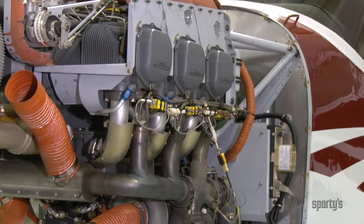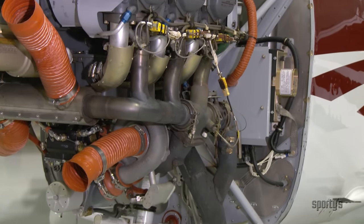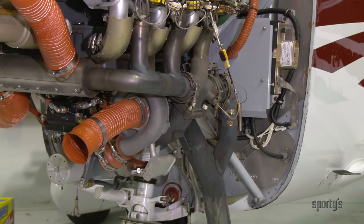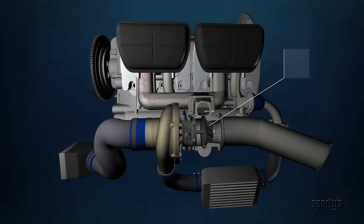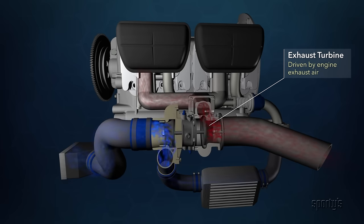Turbochargers utilize a turbine in the exhaust system, which is spun by otherwise wasted exhaust gases. This turbine drives a compressor that is housed separately but shares a common shaft.